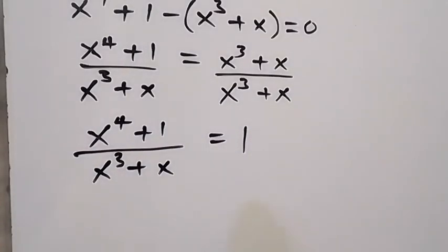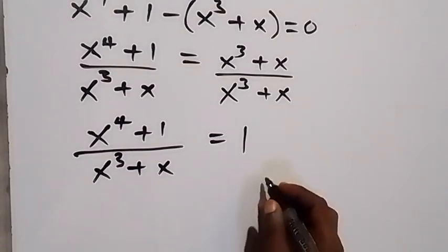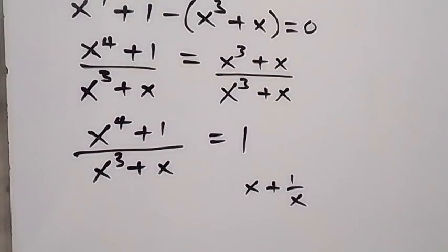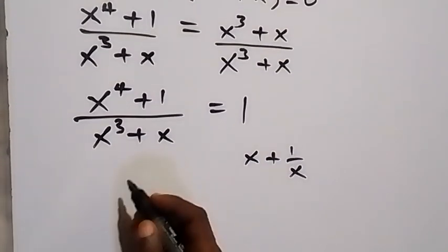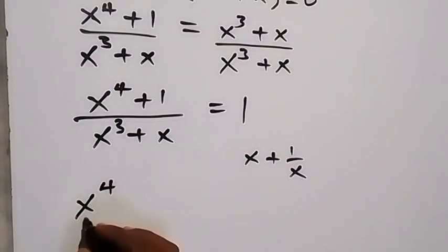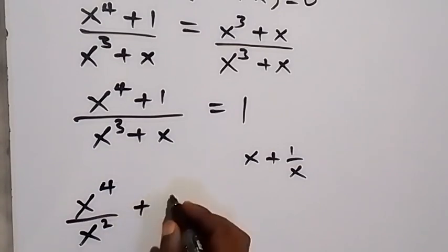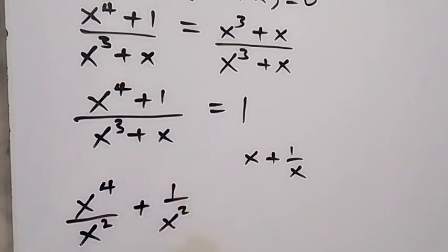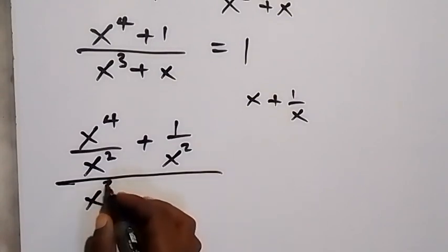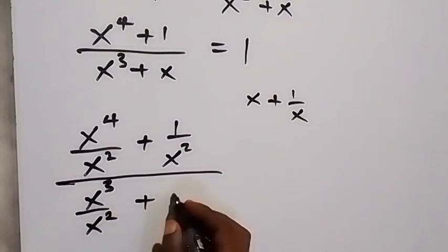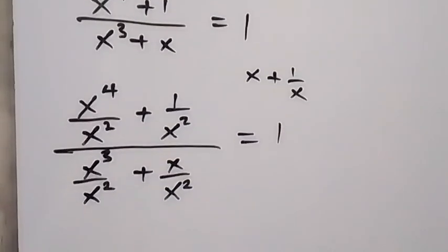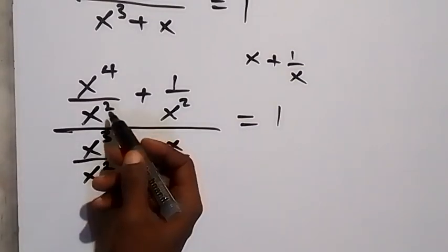Let's try to make the left-hand side have something like x plus 1 over x in common. We divide the terms in the left-hand side by x raised to power 2. We can write this as x raised to power 4 divided by x squared, plus 1 divided by x squared. The denominator as well will be divided by x squared: x raised to power 3 divided by x squared, plus x divided by x squared, which will be equal to 1. From here, when we reduce using the law of indices with the same base, we subtract the powers.